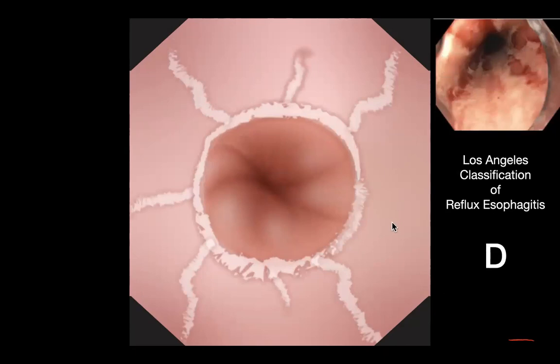To summarize: Grade D is severe erosive esophagitis, and Grade A is mild erosive esophagitis. There is also something called non-erosive reflux disease, otherwise known as NERD — N-E-R-D — where there is no visible erosion on endoscopy.